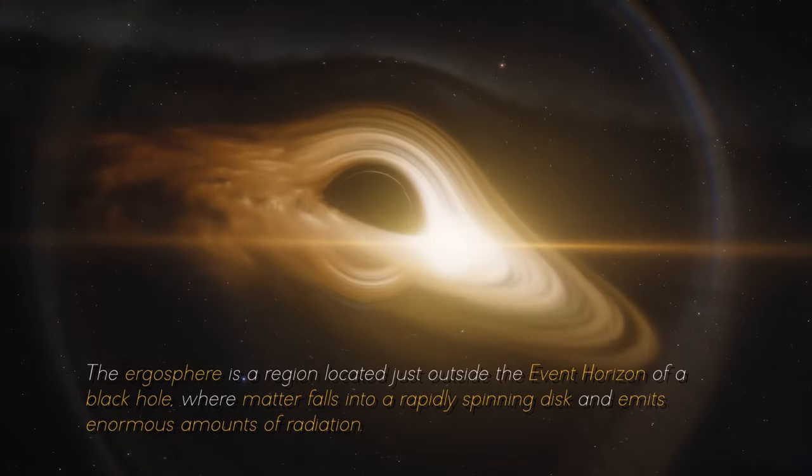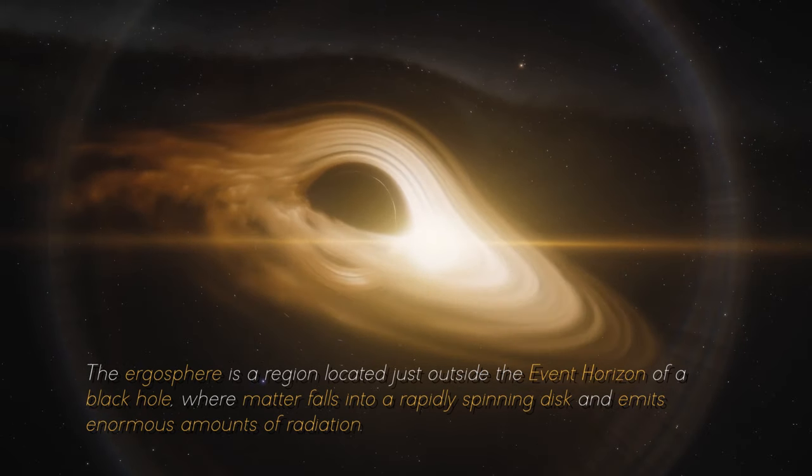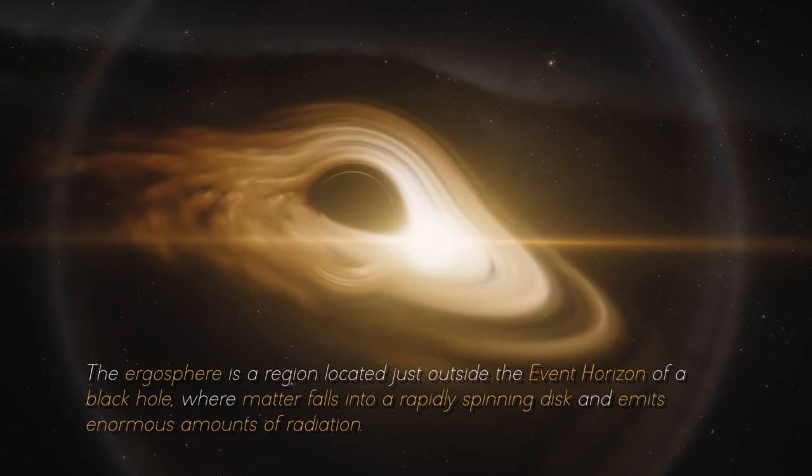The ergosphere is a region located just outside the event horizon of a black hole, where matter falls into a rapidly spinning disk and emits enormous amounts of radiation.